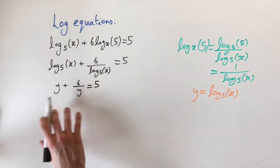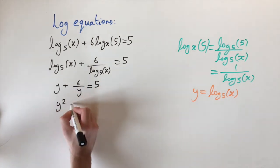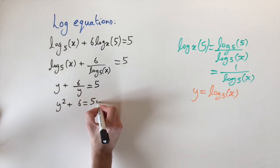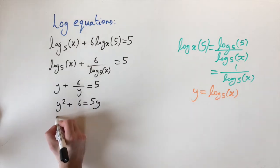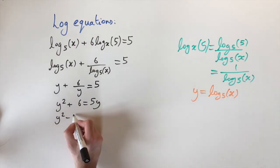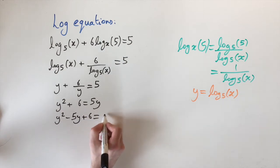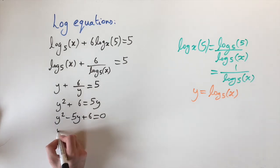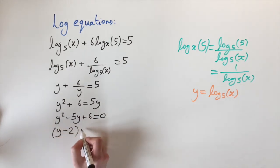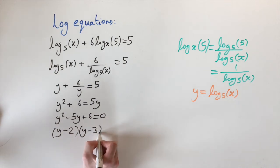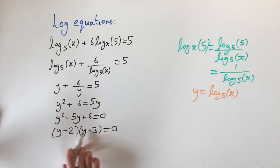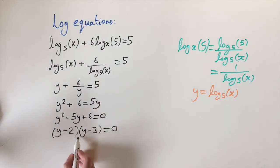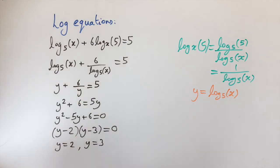This is a quadratic equation in disguise. Multiplying through by y gives y squared plus 6 equals 5y. Bringing everything to one side: y squared minus 5y plus 6 equals 0. This factorizes as (y minus 2)(y minus 3) equals 0, giving solutions y equals 2 and y equals 3.